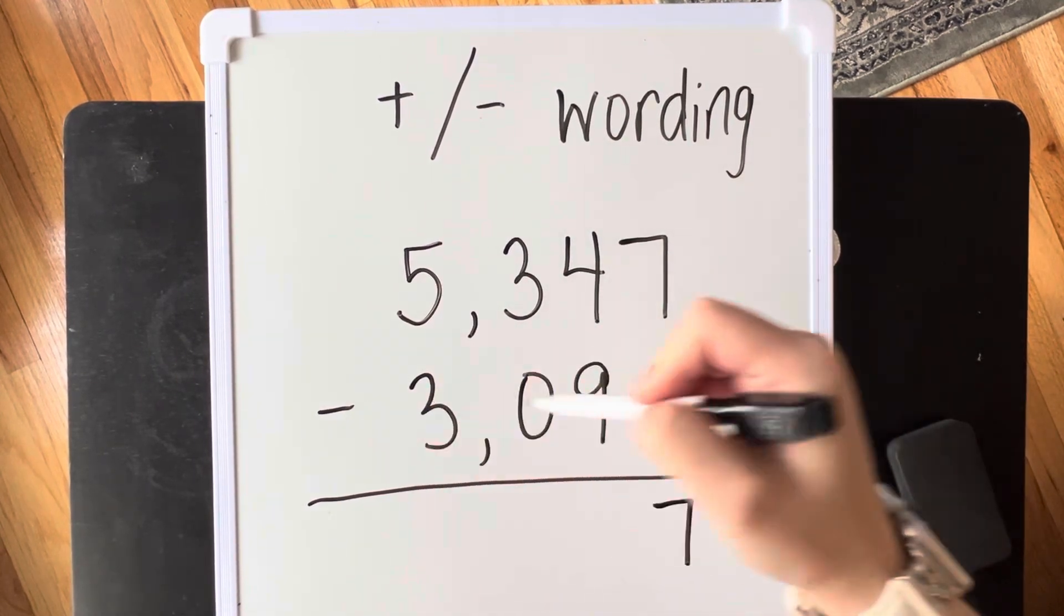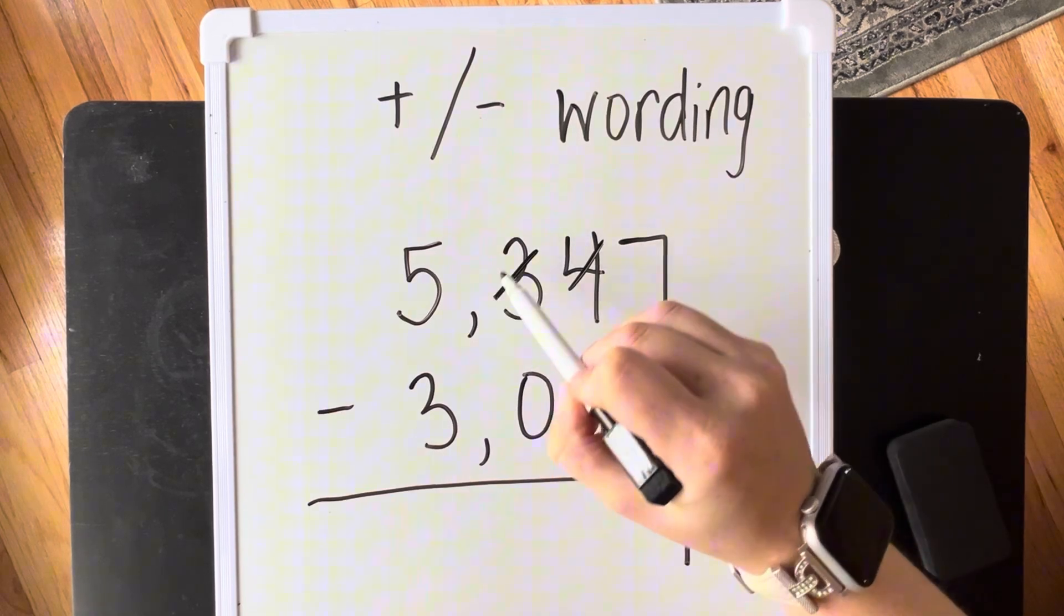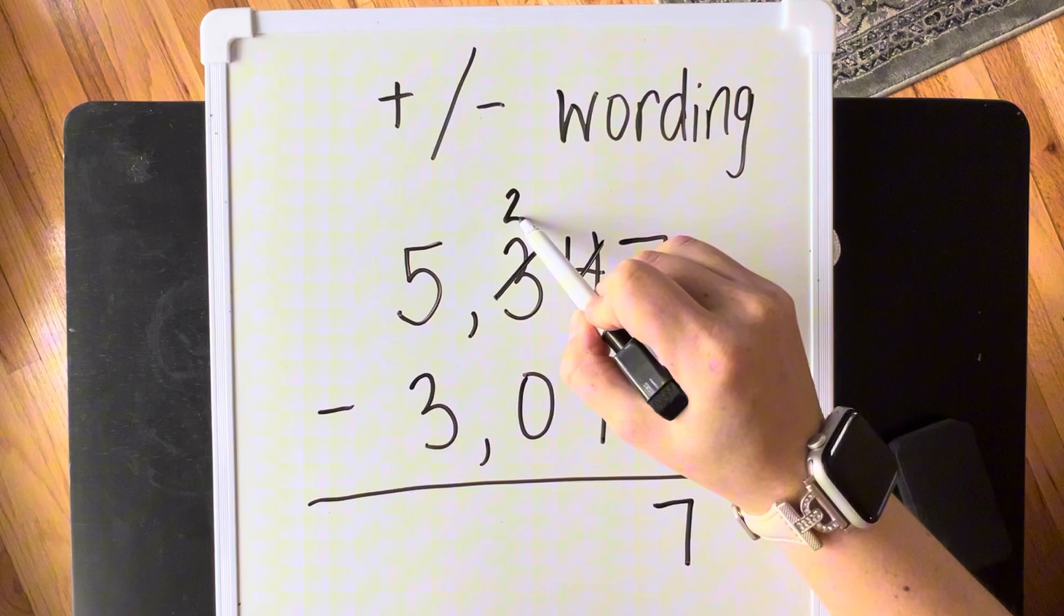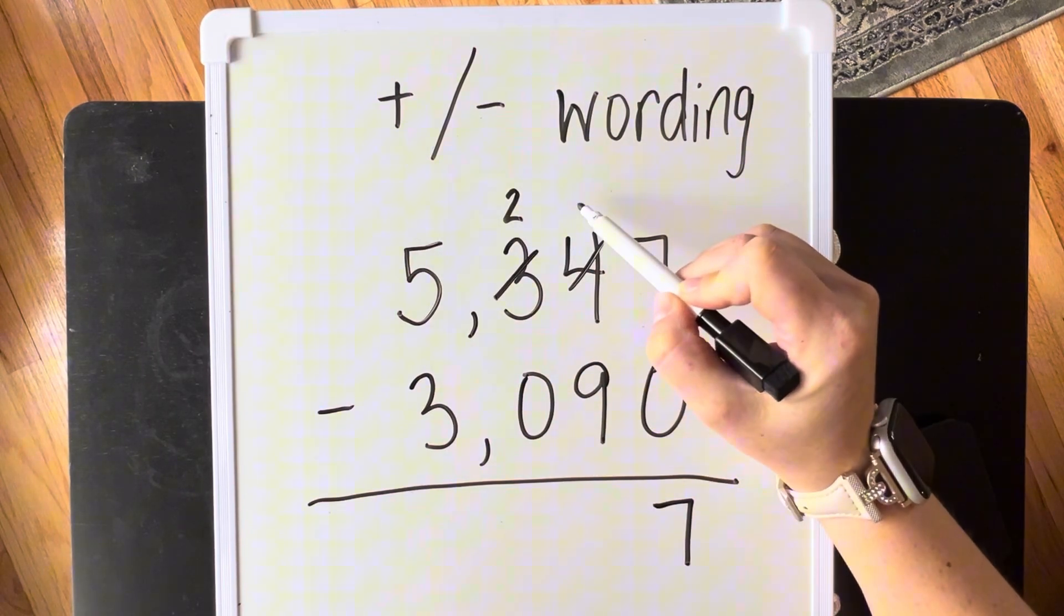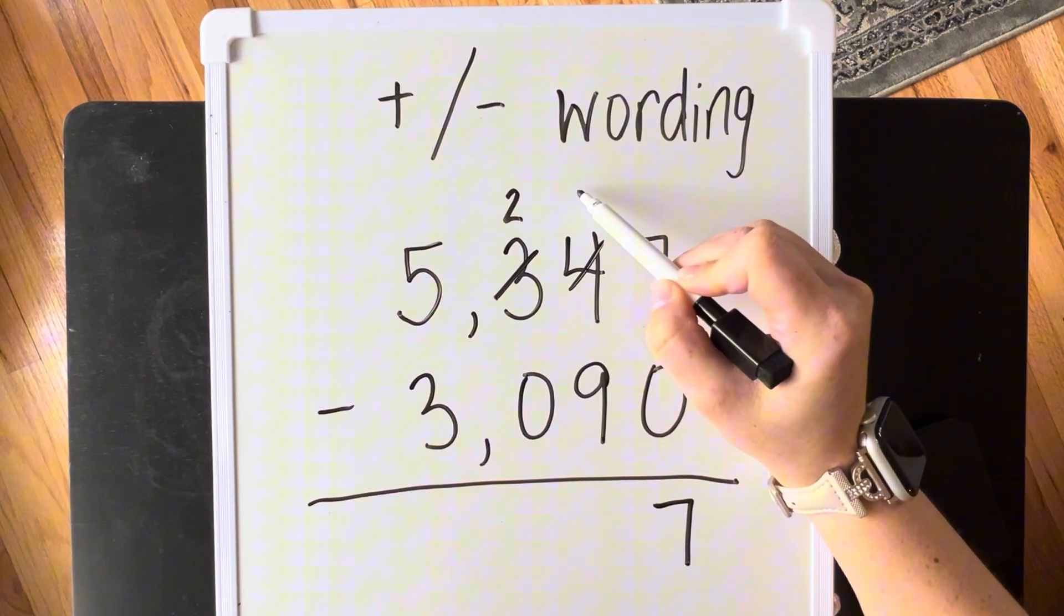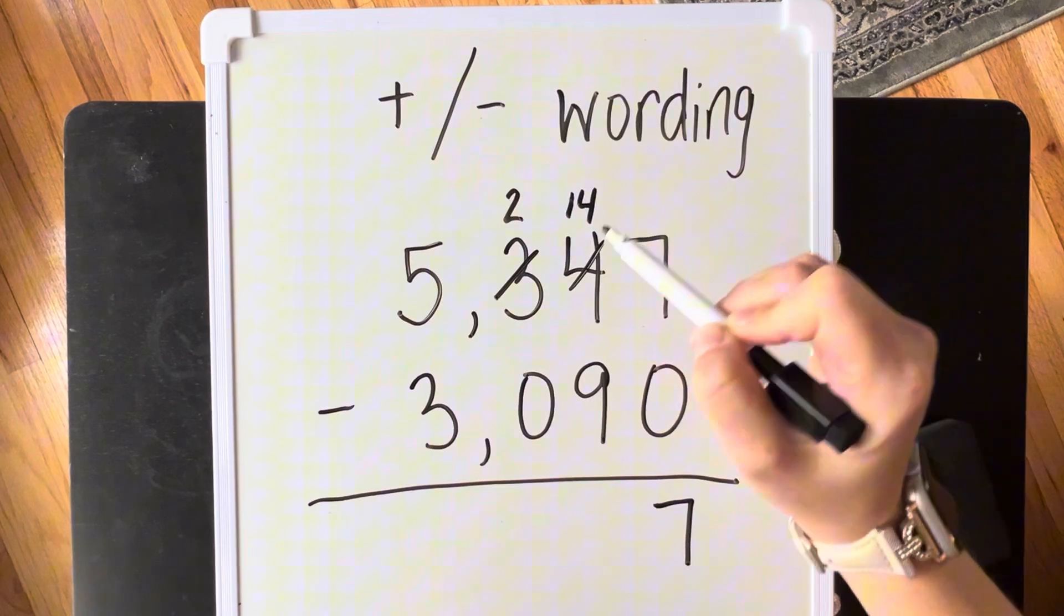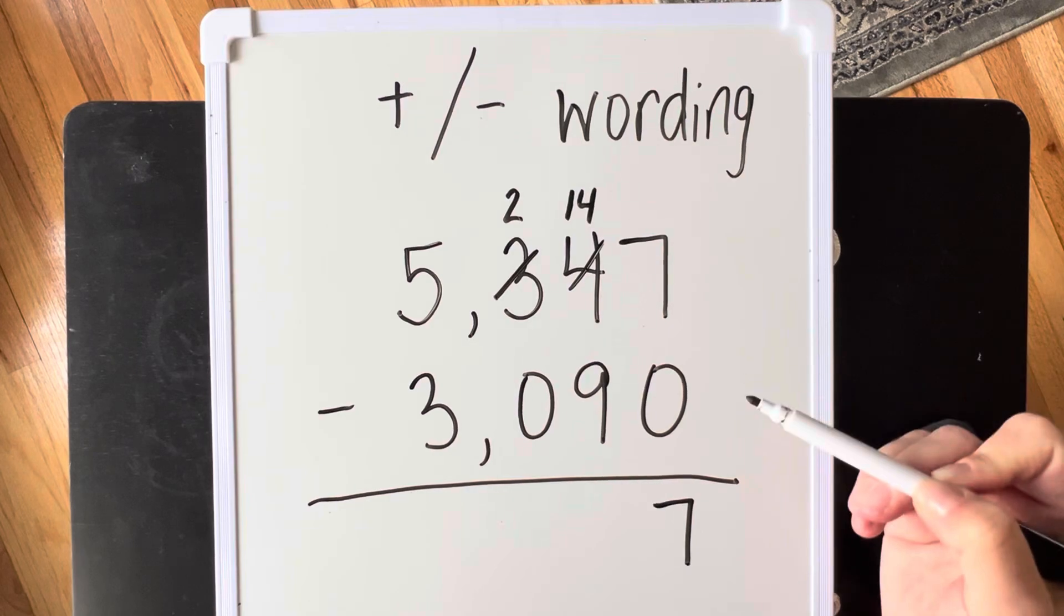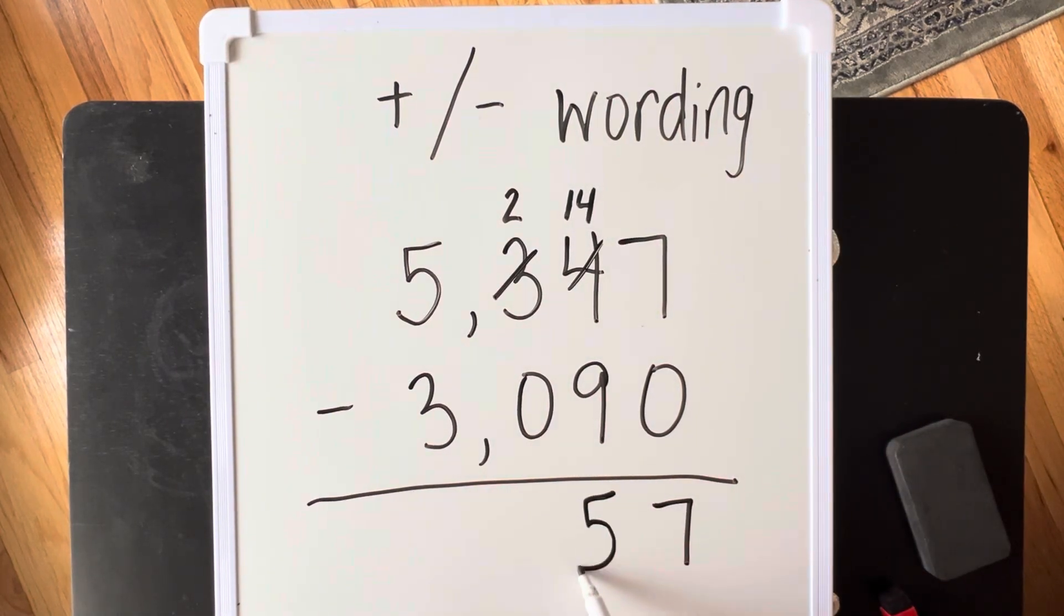4 minus 9. I don't have enough. So I'm going to do a little cross-cross. And we are going to change our 300s into 200s. We are going to regroup them in our tens place. And we are going to change the 4 into 14. We regrouped 10 tens and gave it to the tens place. 14 minus 9 is 5.